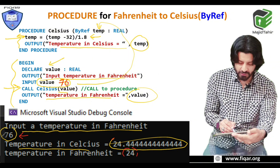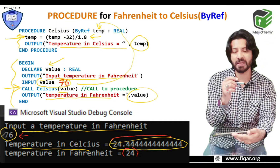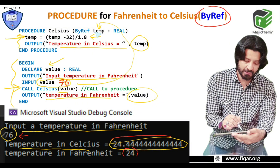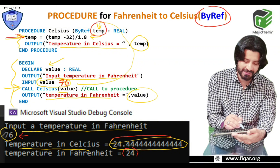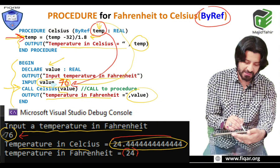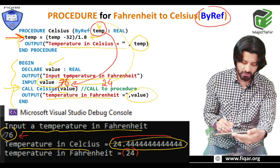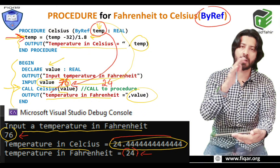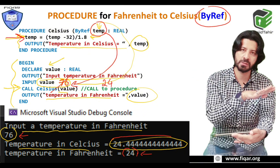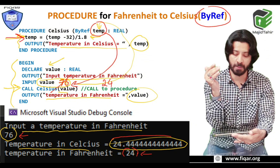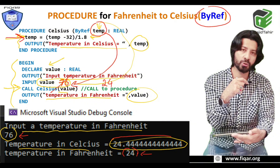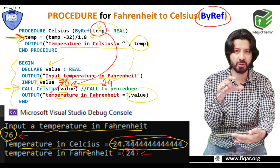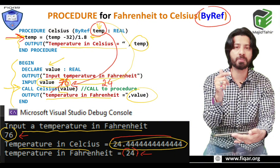This happens because of by ref. When we apply the parameter by ref, whatever happens to temp also happens to the original variable — so 76 is actually changed to 24. By ref is used when we need to update the value everywhere in the program wherever the variable is referred to. By val is used when we want to work with the value inside the procedure but keep the original variable unchanged.